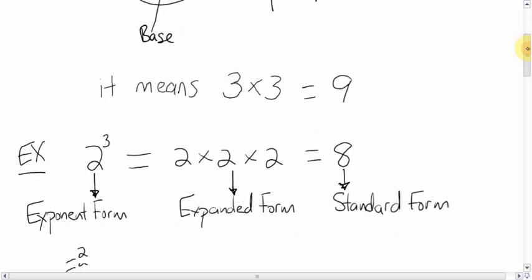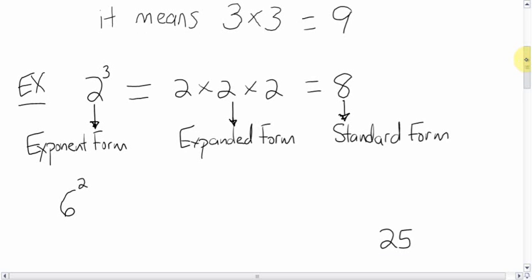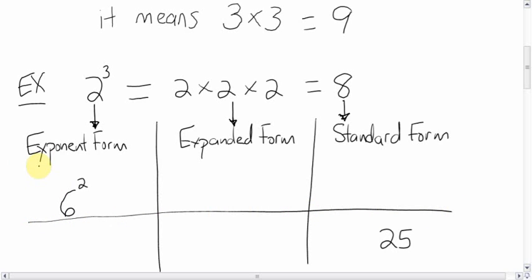So, using that, let's make a little table here and fill in the table. What's missing? So, if you have an exponent form of 6 to the power 2, or 6 squared, the expanded form would be that 6 times itself 2 times. 6 times 6, and the answer to that is 36. That's your standard form, or answer.